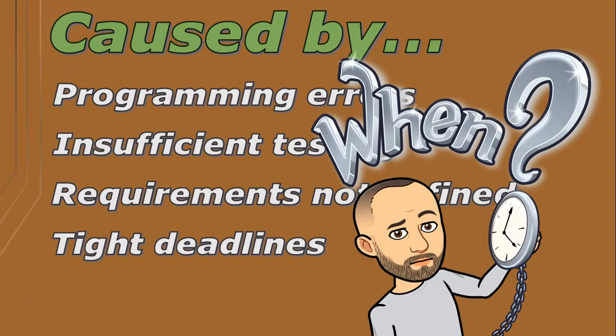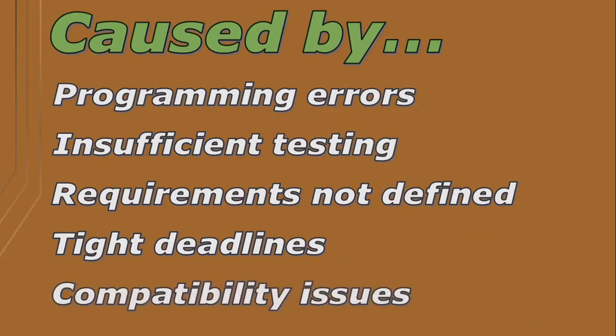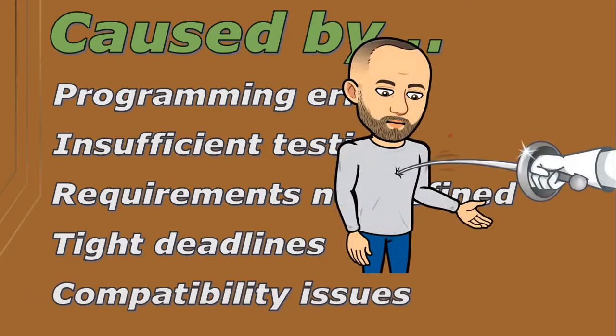How many times has a game been advertised to be released on a certain date, but the very first version can often contain many errors that you then have to wait for patches and updates to fix? We also mustn't forget that software doesn't always work in isolation — it needs to interact with other software and systems, and this can cause integration issues when these systems have compatibility problems.